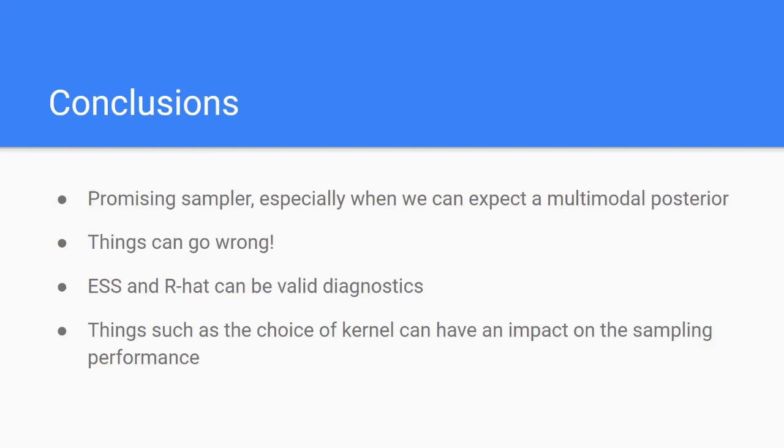In this regard, we have seen that ESS and R-hat can both be valid in assessing the sampling. Another important thing when doing SMC sampling is the choice of the kernel, as we've seen this can have a major impact on the sampling performance.